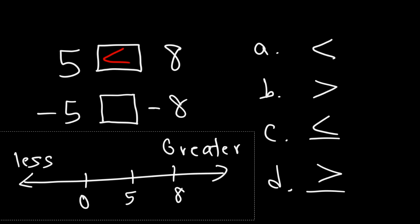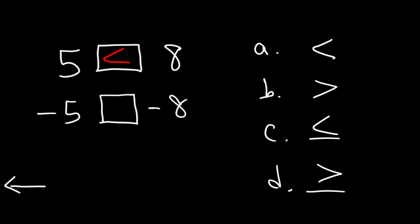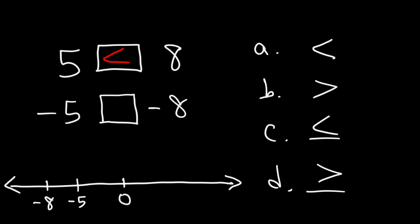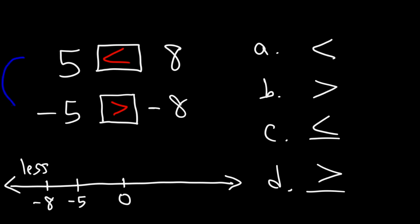Now what about negative numbers? On a number line, negative 8 is to the left of negative 5, which means negative 8 is less than negative 5. So negative 5 is greater than negative 8, which corresponds to answer choice B. Notice that going from the first scenario to the second, all you need to do is multiply both sides by negative 1. Whenever you multiply or divide by a negative number, the inequality changes sign — make sure you understand that when solving linear inequalities.